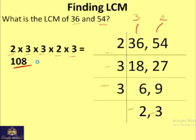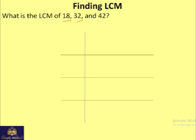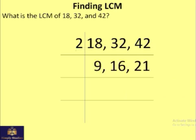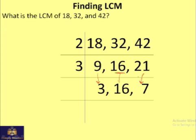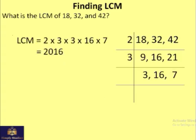Finding the LCM of three numbers — 18, 32, and 42 — we place them in the table. All are divisible by 2: 2 times 9 is 18, 2 times 16 is 32, 2 times 21 is 42. Next, 9 and 21 are divisible by 3, but 16 is not, so it stays: 3 times 3 is 9, 3 times 7 is 21, 16 remains. No number divides even two of them now, so we stop. LCM = 2 × 3 × 3 × 16 × 7.